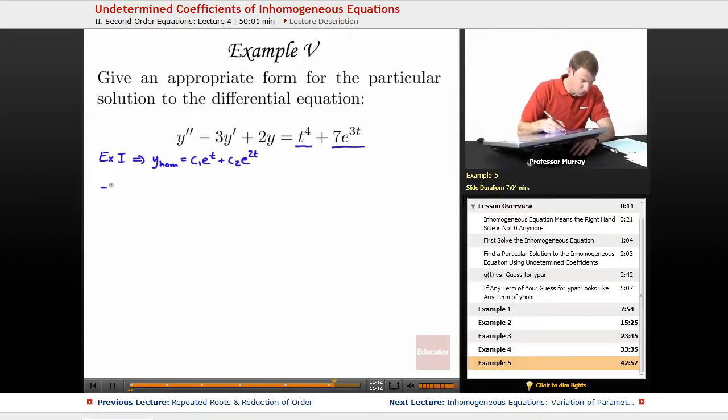So, we're going to guess. For the first term there, we'll make our first particular solution. I see a t to the fourth, which means I need a fourth-degree polynomial, generic. I can't just say a t to the fourth. I've got to say A*t^4 + B*t^3 + C*t^2 + D*t + E.